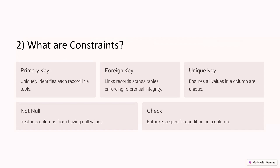Primary key uniquely identifies each record in a table. Foreign key links tables together. Unique key ensures all values in a column are unique — each value appears only once. Not null means the column should not have any null values. Check means we apply certain conditions, and only values that pass the check are allowed in that column.